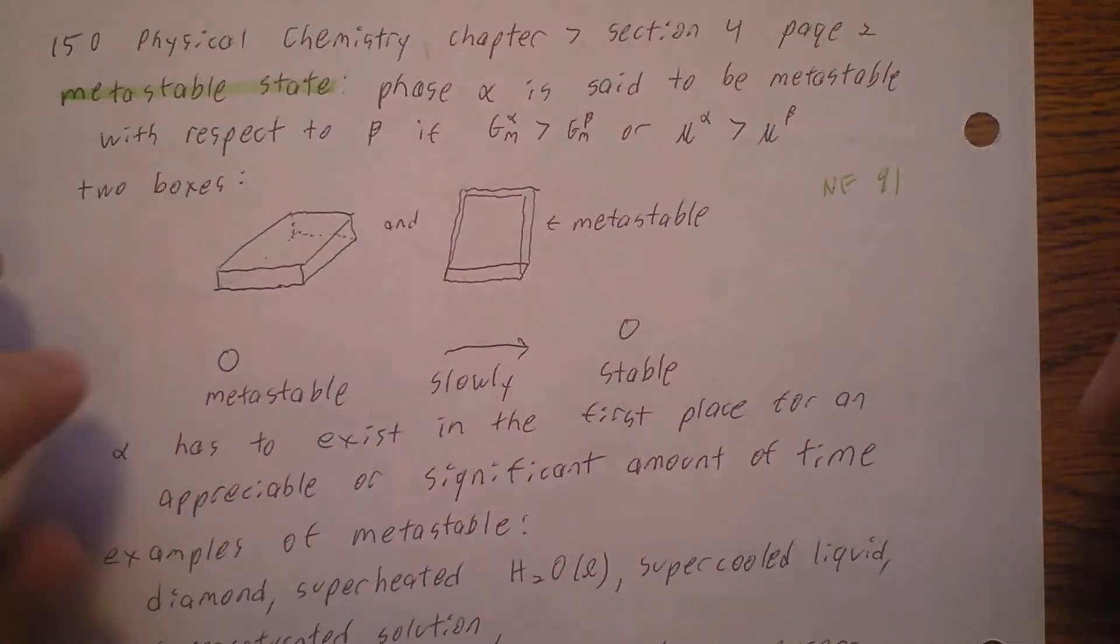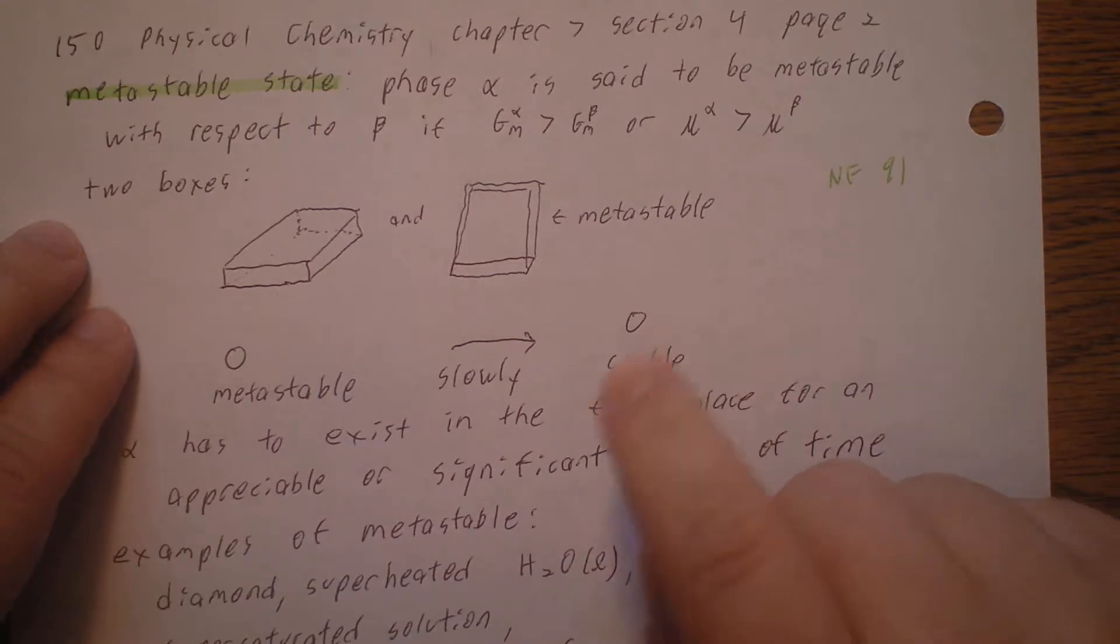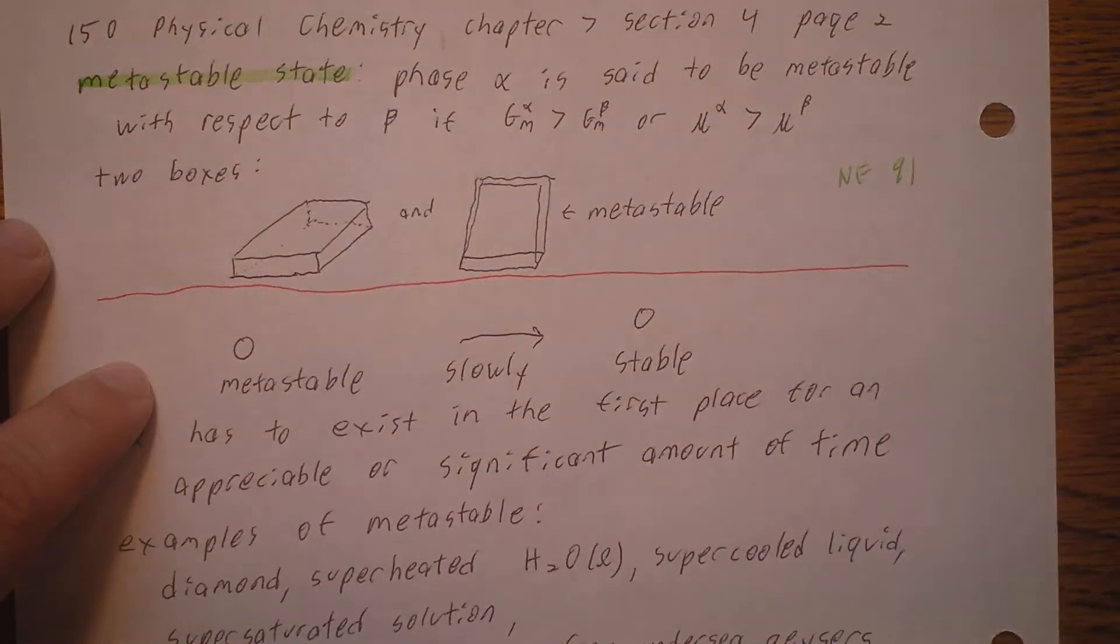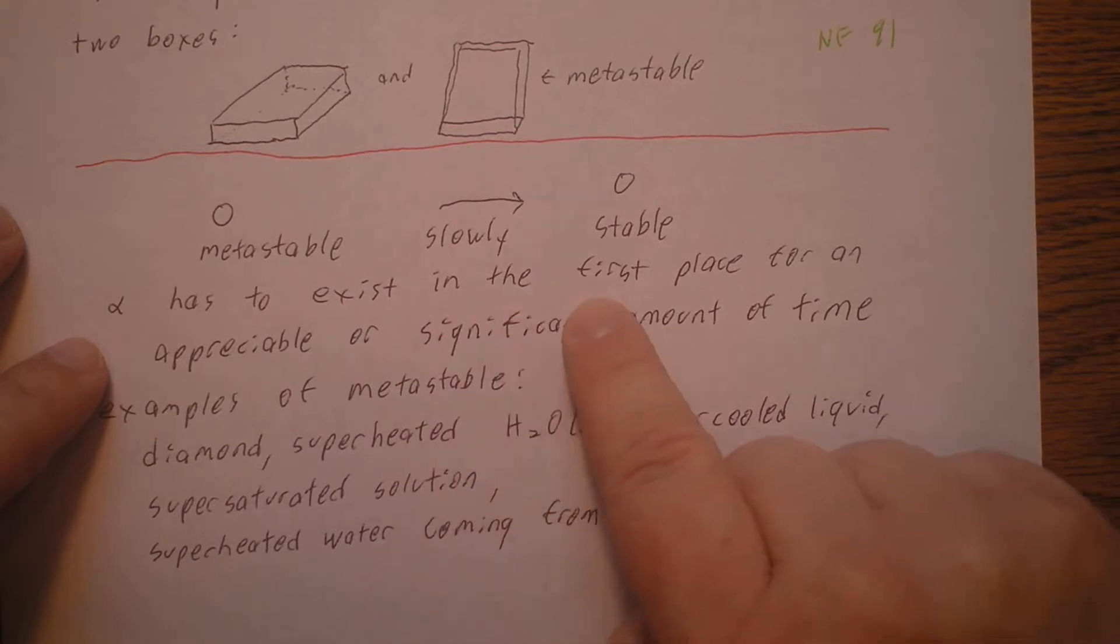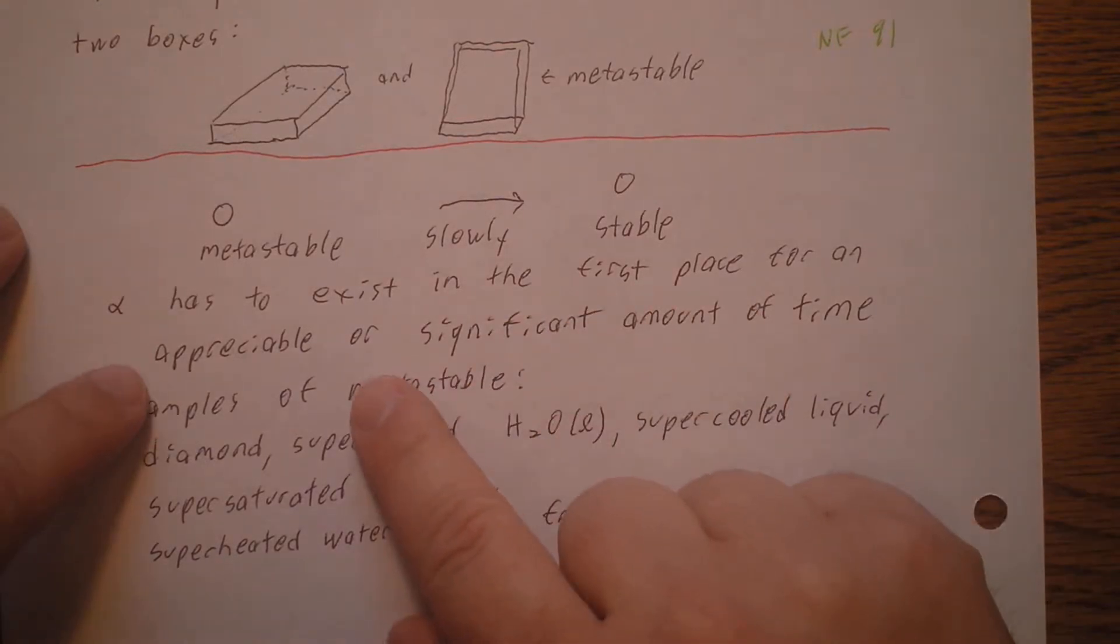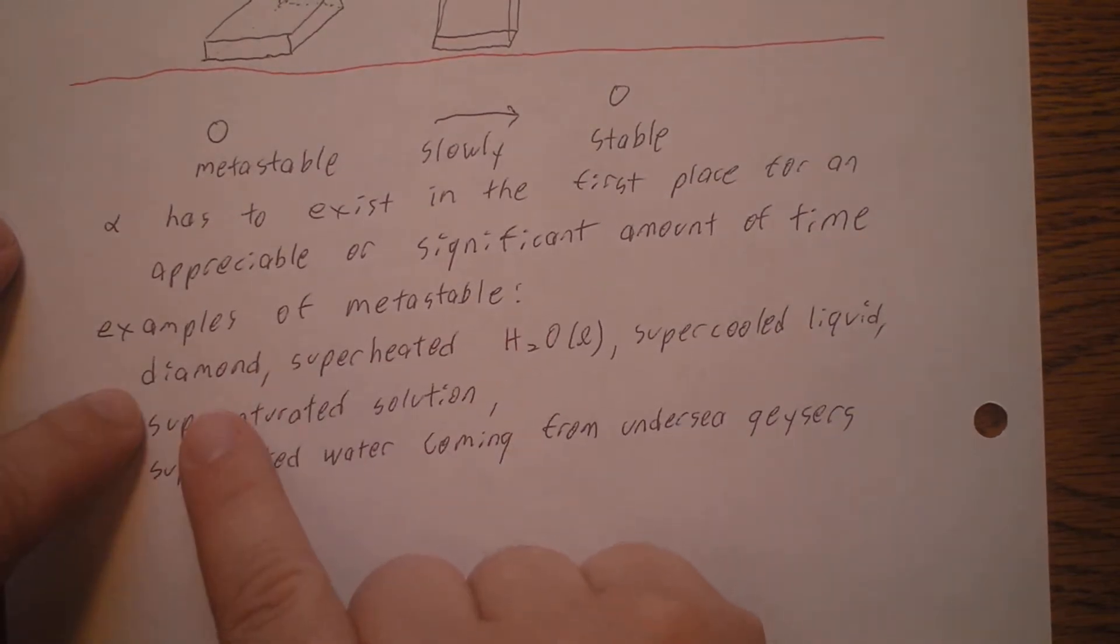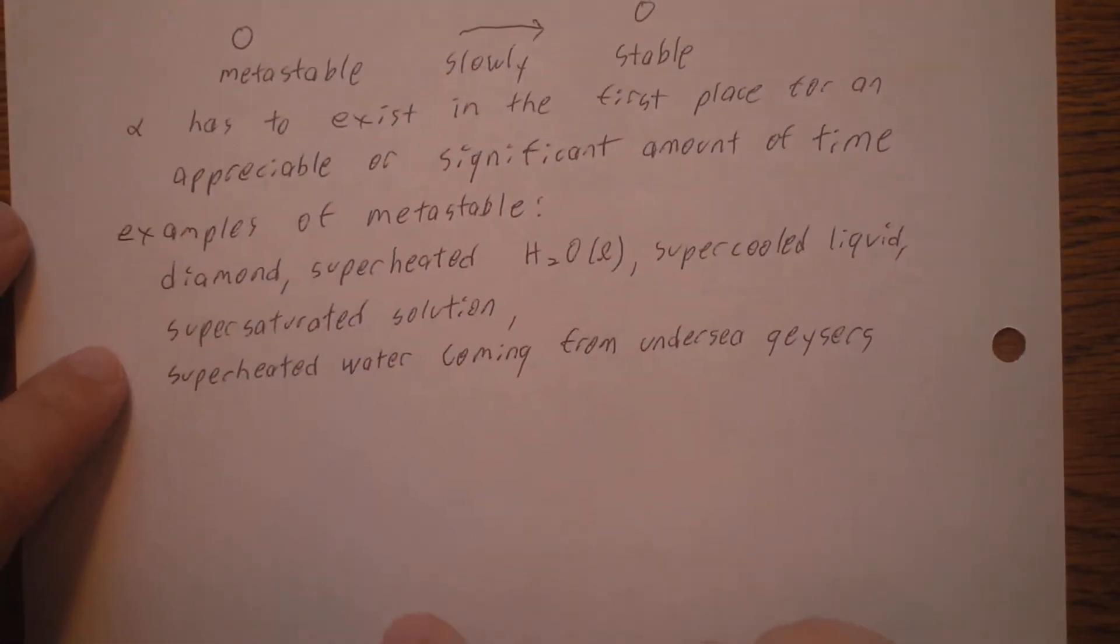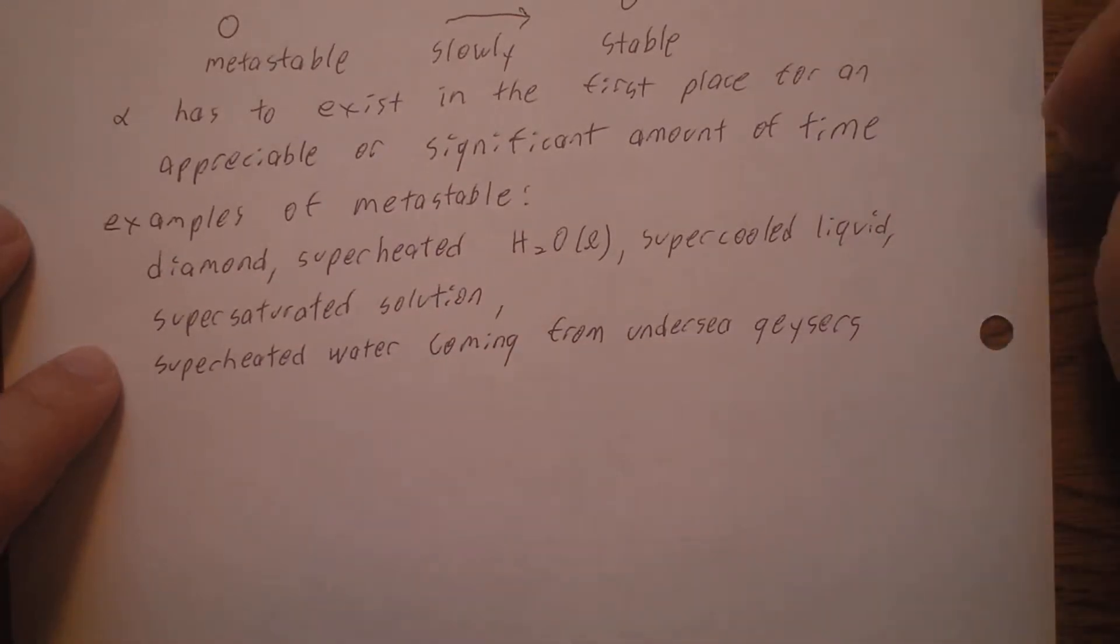This is a different diagram down here. If it's metastable, it's going to slowly go to stable if it can at all. Alpha has to exist in the first place for an appreciable or significant amount of time. For example, diamond is metastable compared to graphite. Superheated H2O liquid or supercooled liquid, a supersaturated solution, or superheated water coming from undersea geysers. All those are metastable.